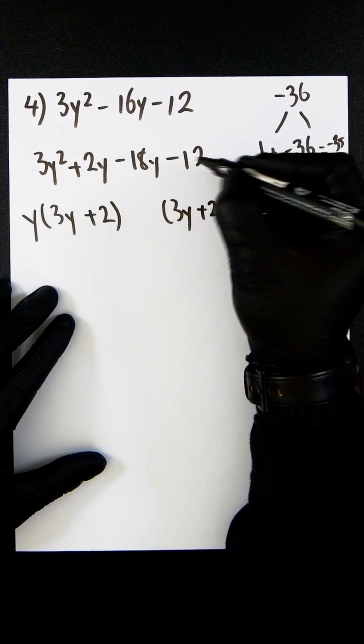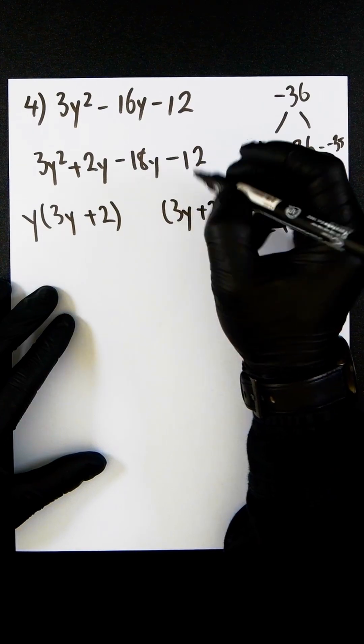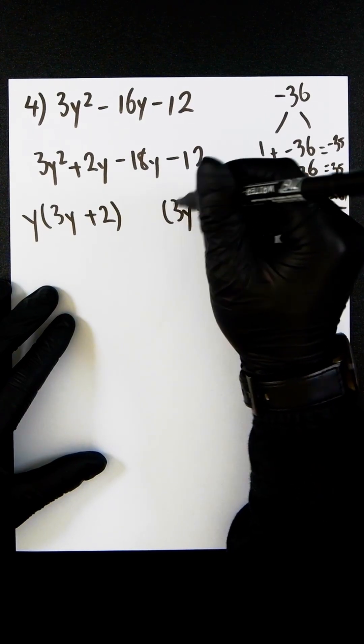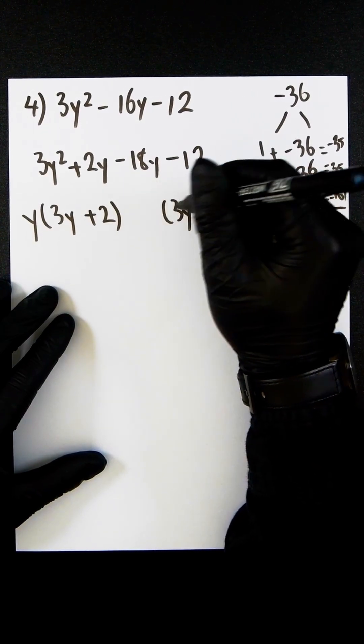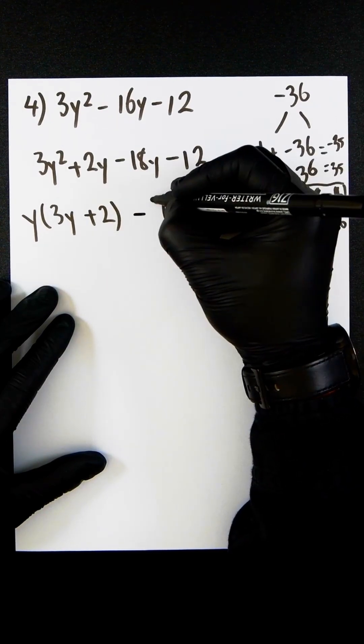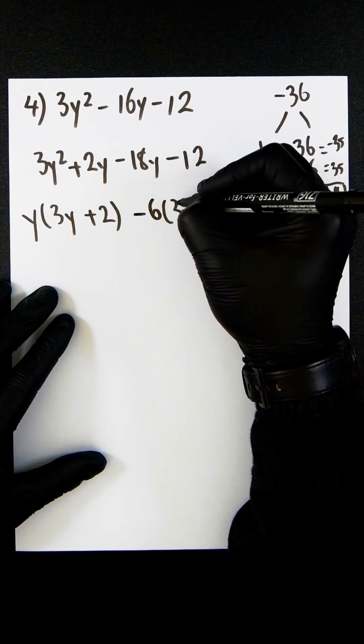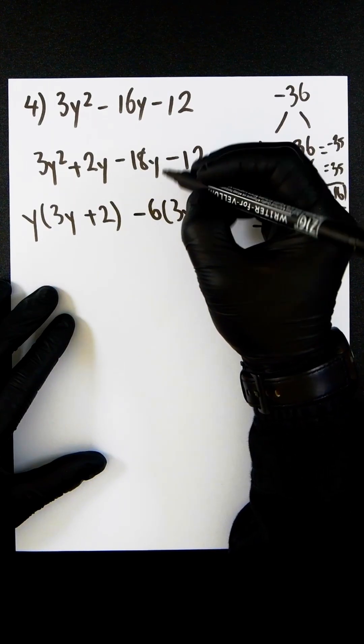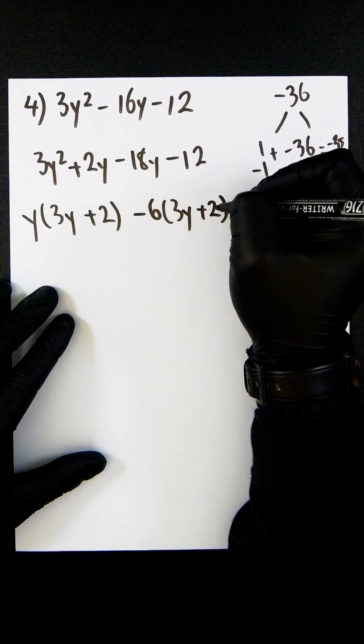We look to see what value we need to factor out, which is going to be minus 6. Because minus 6 times 3y and minus 6 times 2